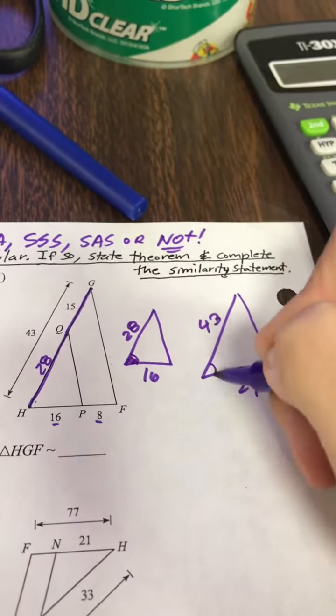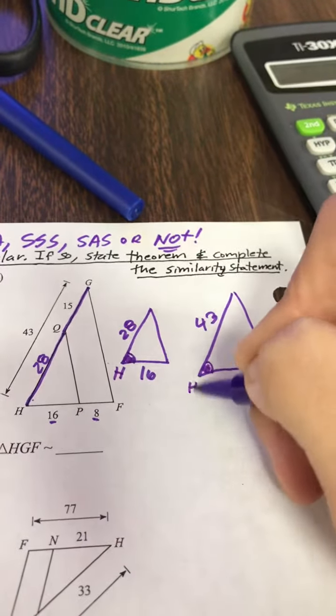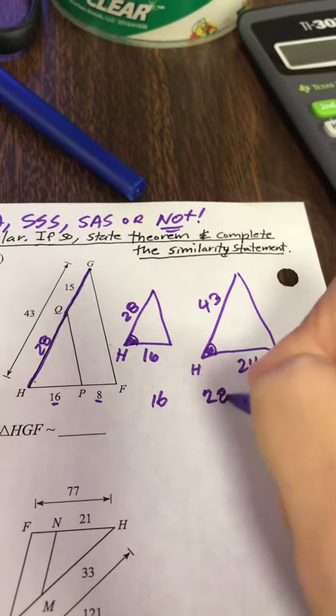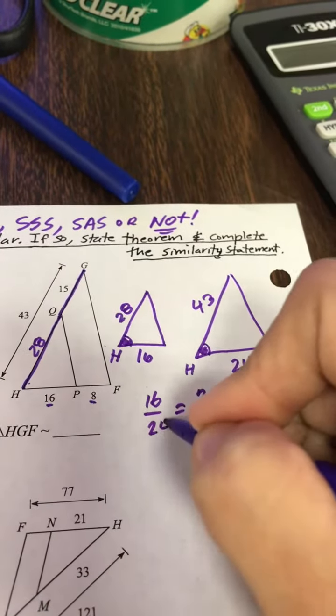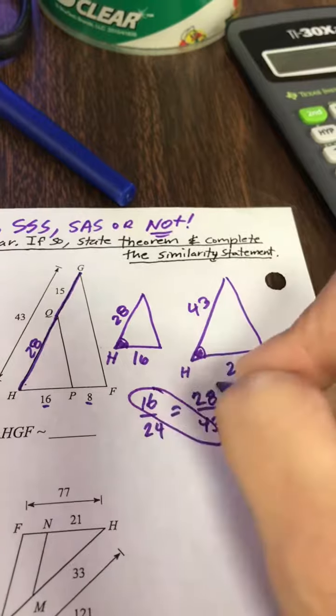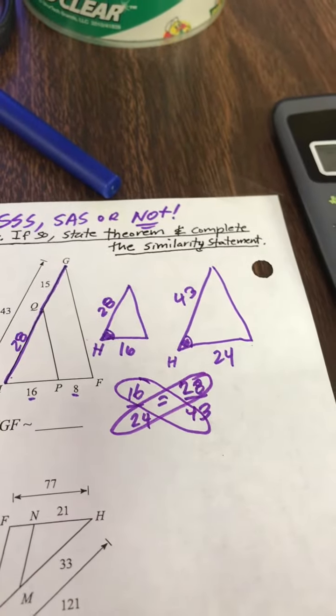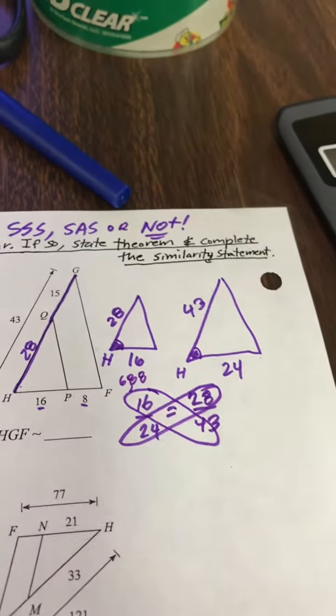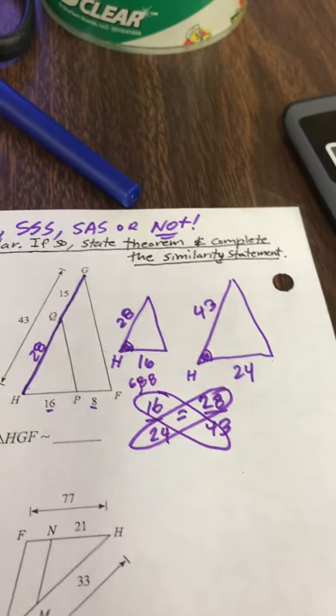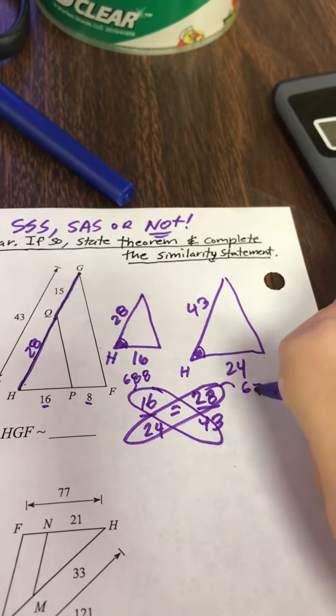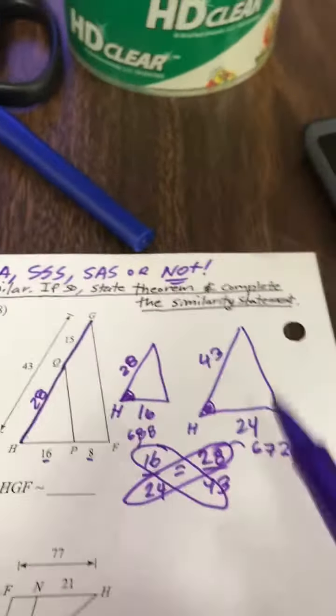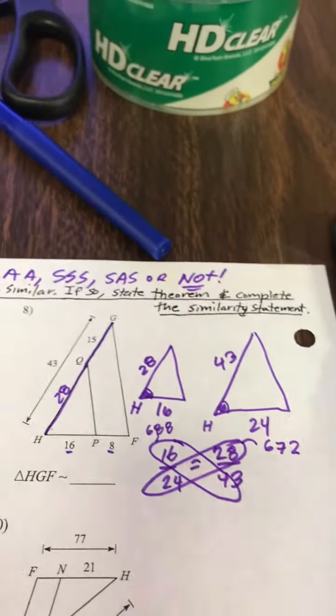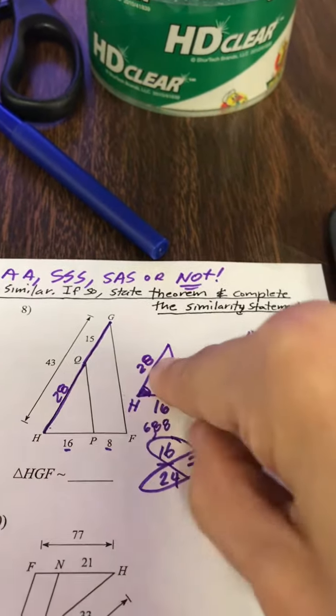Now, notice that both of them have angle H. Both the mom and the baby have angle H. So this would be SAS if these work out. So let's set them up least to greatest. Cross multiply to see if their cross products are equal, which would confirm that they are the same ratio. So I get 688. 672. So anytime I get a problem, I want to just reconfirm my math.